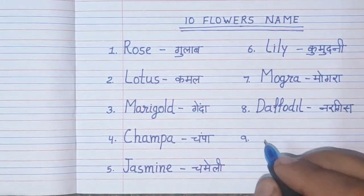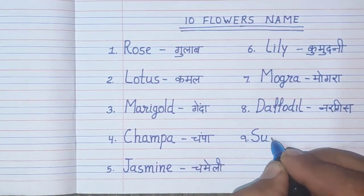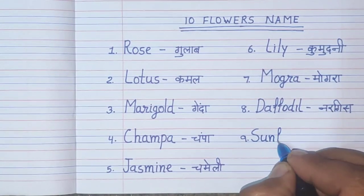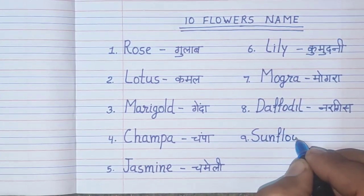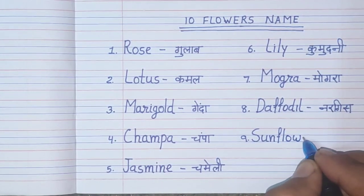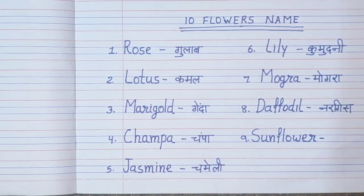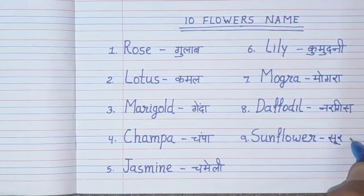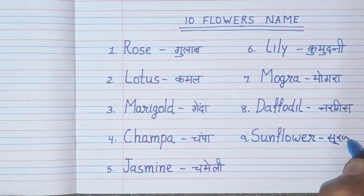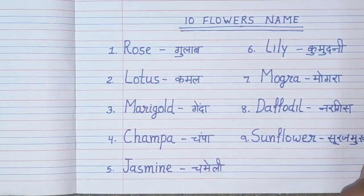Number 9. Sunflower. Sunflower means Surajmukhi.